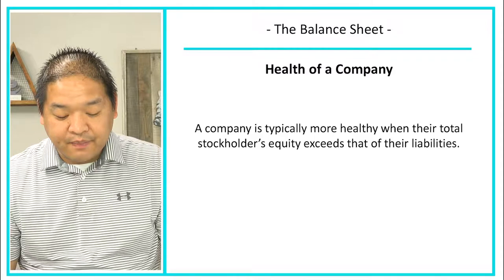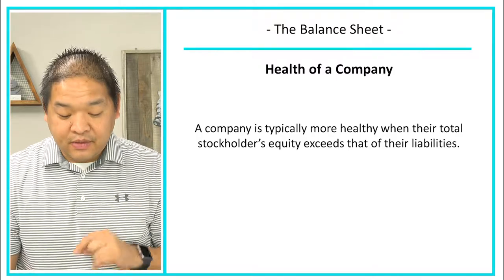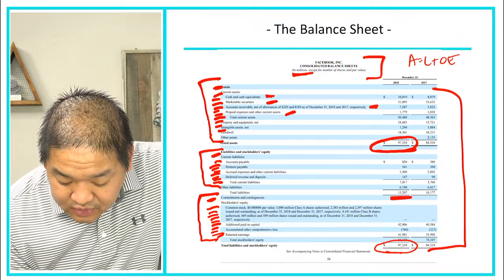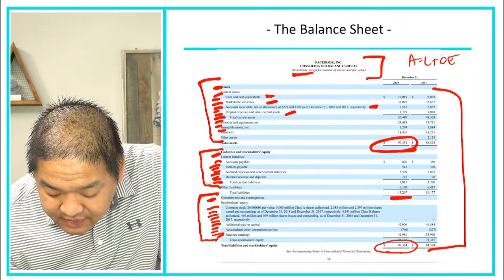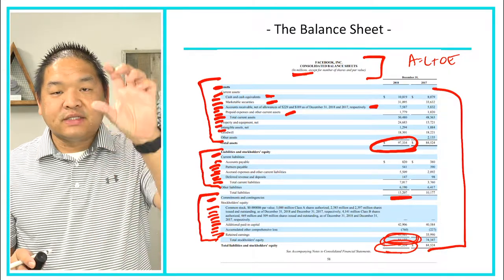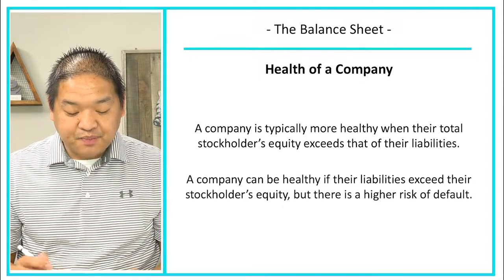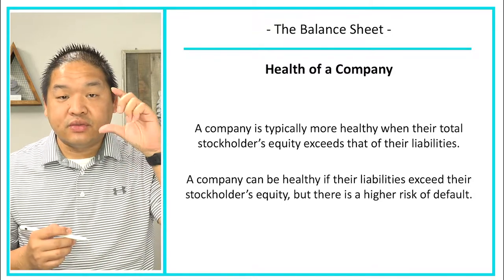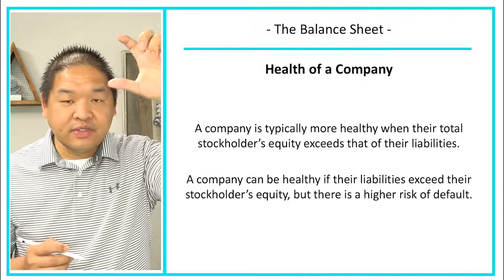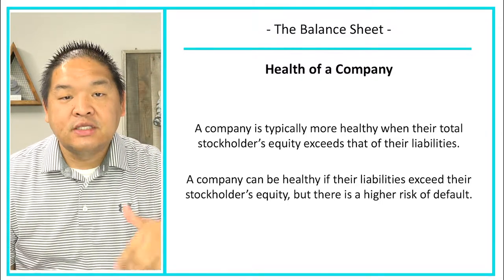This balance sheet gives us the health of the company. A company is typically more healthy when their total shareholders' equity exceeds their liabilities. Facebook's liabilities are $13 billion while shareholders' equity is about $84 billion — more stockholders' equity than liabilities. They are a very healthy company and not using too much leverage to operate their business.